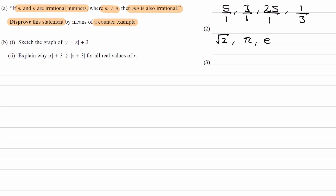We want to disprove this statement — we want to find a scenario where it's not true. There are a few different ways we can do this. Let's first look at root 2. You can have two surds involving root 2 multiplied by one another to give a rational answer. If both numbers contain root 2, examples would be something like root 2 and 2 root 2.